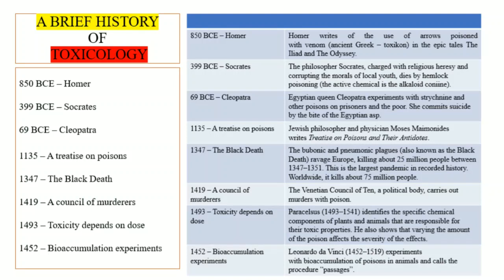Moving towards the history of toxicology: first, 850 BCE — Homer, a writer who wrote The Iliad and The Odyssey, described two warriors who returned after war and shared their experiences. In this book, he wrote about arrows on which venom or poison was applied, used to kill the enemy so that victims could be more easily eliminated.